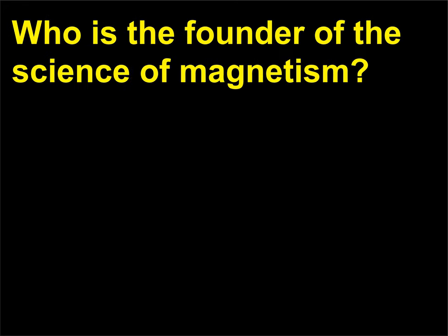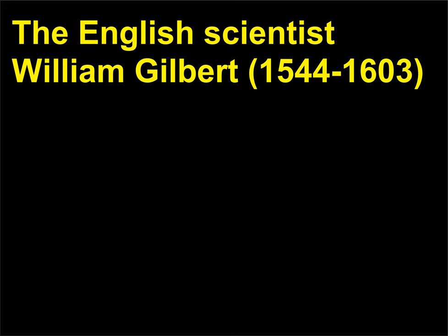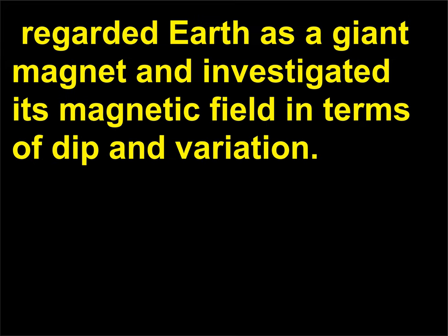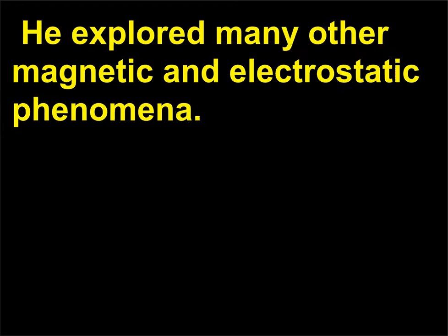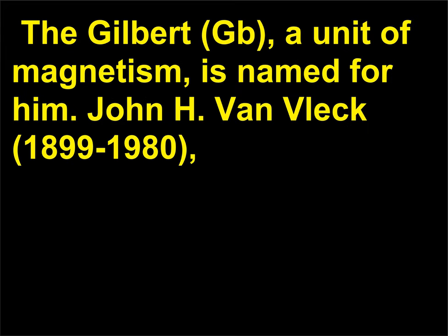Who is the founder of the science of magnetism? The English scientist William Gilbert (1544–1603) regarded Earth as a giant magnet and investigated its magnetic field in terms of dip and variation. He explored many other magnetic and electrostatic phenomena. The gilbert (Gb), a unit of magnetism, is named for him.